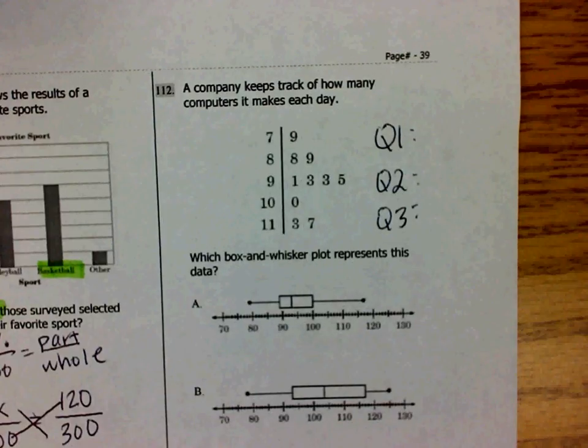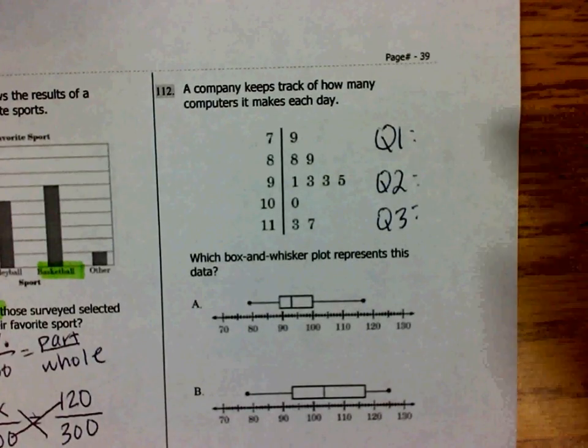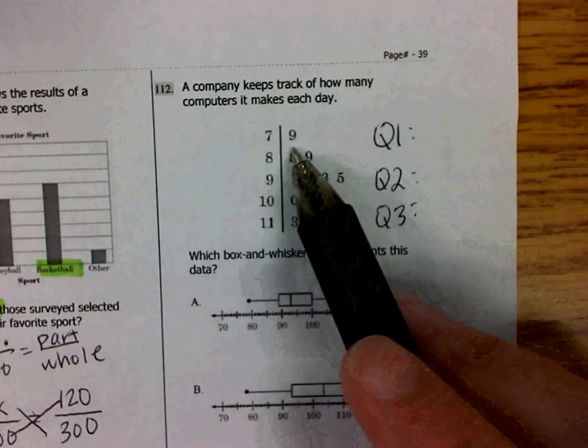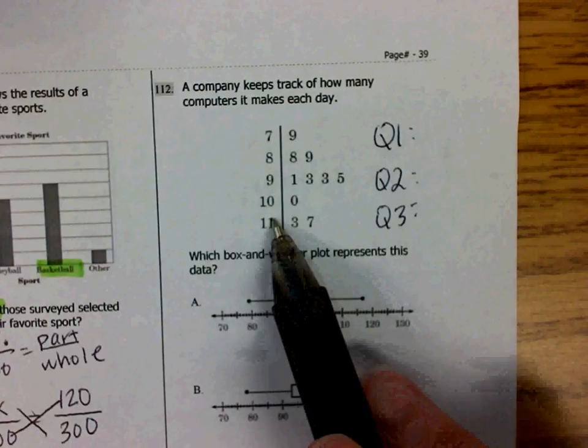The good part about a stem and leaf plot is that it already puts the data in order for you. So if I take a look at this data set here, each of these stems is a tens place, and the leaf is a ones place.